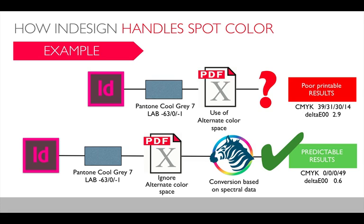If you use the conversion with Zebra, we ignore the alternate color space and do the conversion based on our spectral color module. We get a much better, more predictable result — better in terms of ΔE accuracy. A result of 0.6 is much better than 2.9, obviously. And we achieve this result by using just 49% black. This is much more printable because you don't have any overprint issues, and if your gray gradient from white to full tone uses only black, you obviously don't get color shifts at the end.